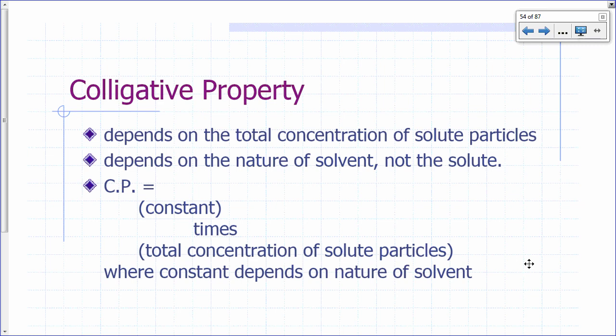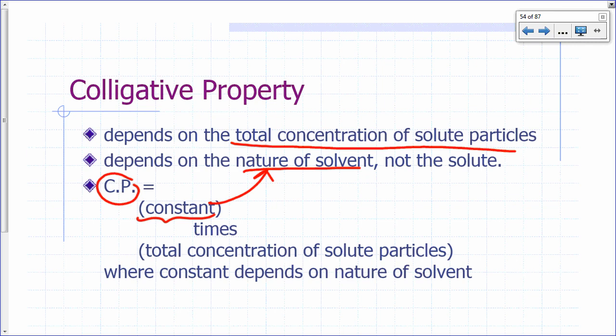Today we're going to talk about colligative properties. These are properties of solutions that depend on the total concentration of solute particles. They don't depend on what the solutes are — what matters is the total concentration of solute particles in the solution. And it depends on the nature of the solvent, not the solute. So a colligative property equals some constant — that particular constant depends on what your solvent is — times the concentration of all the solute particles.